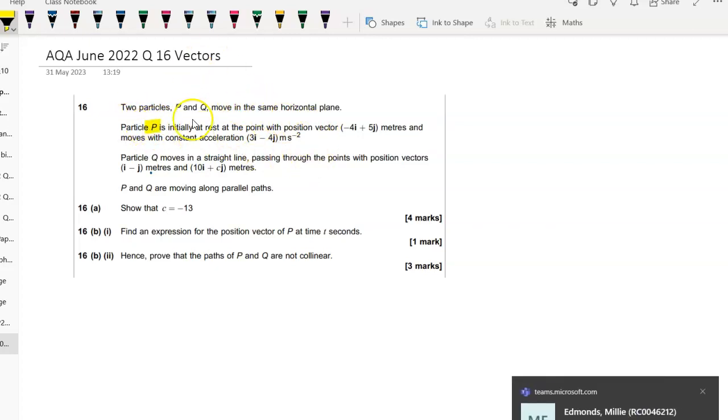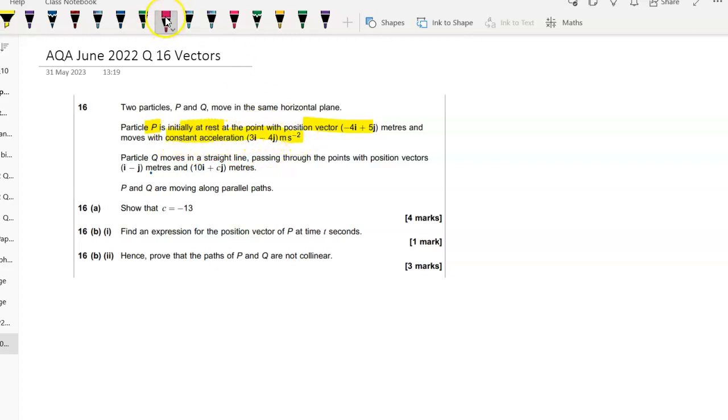We've got a particle P which is initially at rest, so u is zero, is initially at that position vector, and it moves with constant acceleration of 3i minus 4j. So, it tells us constant acceleration, so we can use SUVAT.